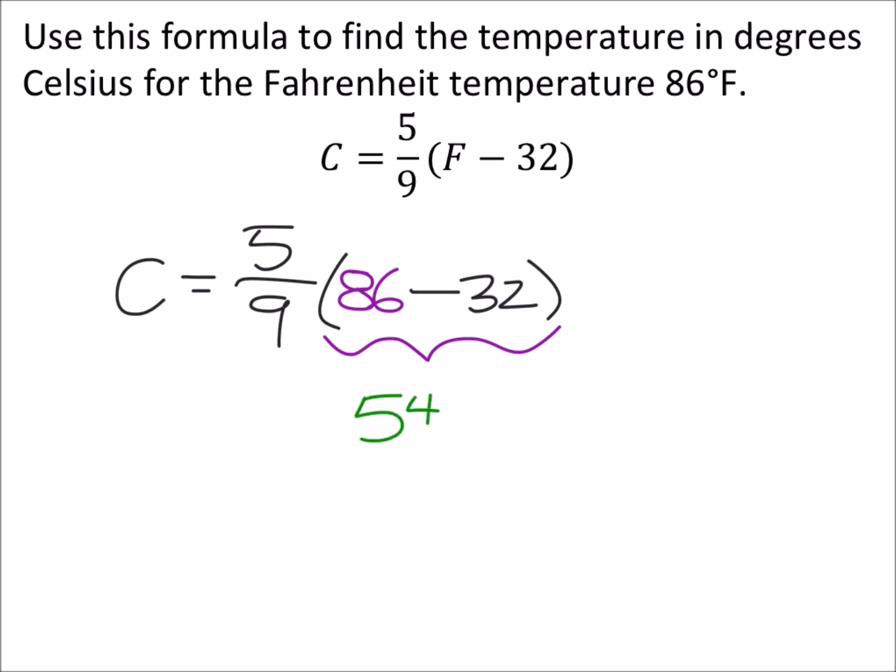So that gives us 54 right there. So I've got 5 ninths times that 54. That'll give us our Celsius degrees. 5 ninths times 54. See what that gives us. 30.